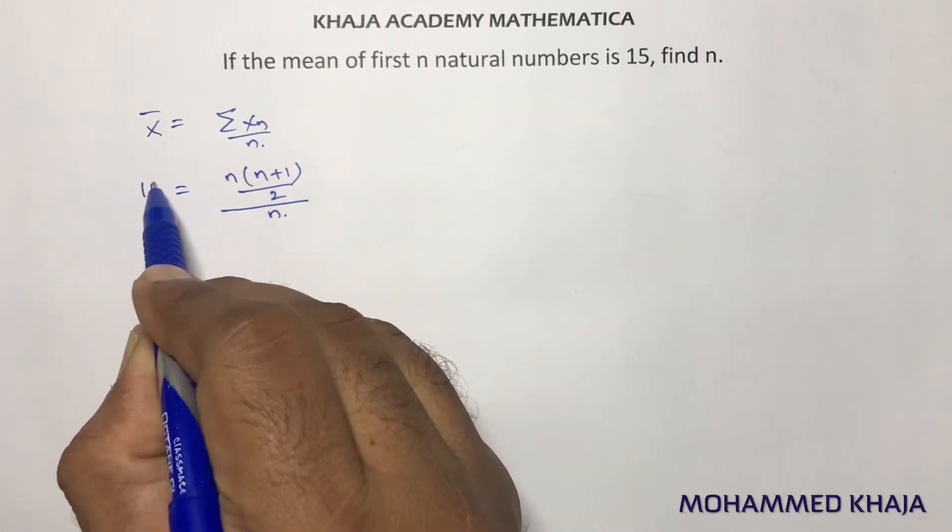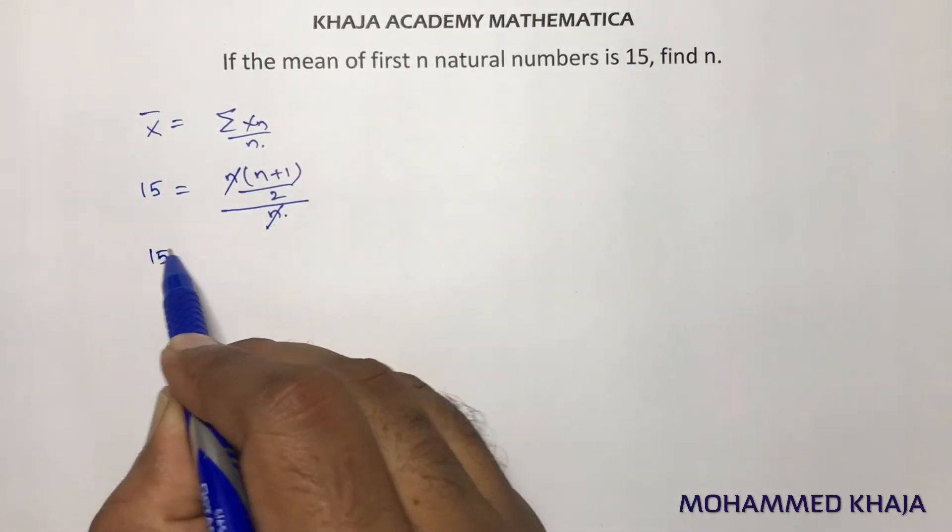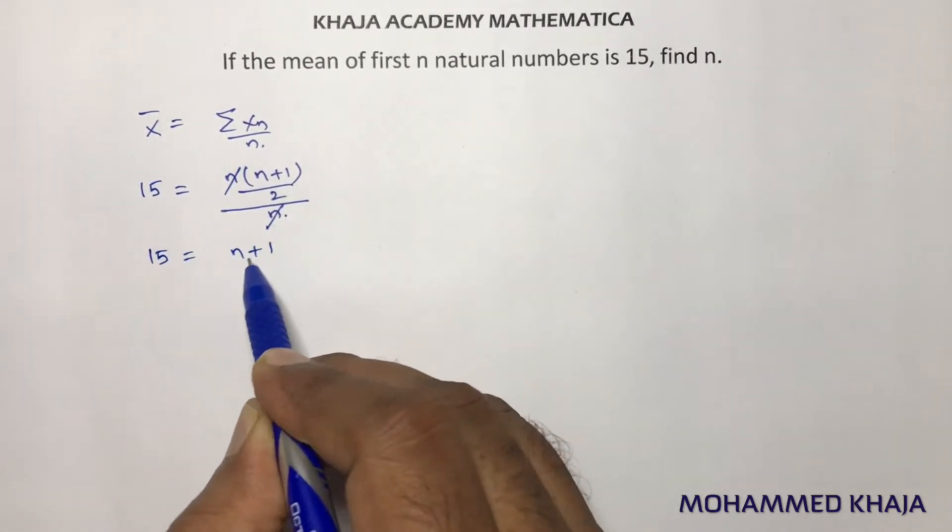Mean is 15. Here, n and n will get cancelled. So 15 equals n plus 1 by 2.